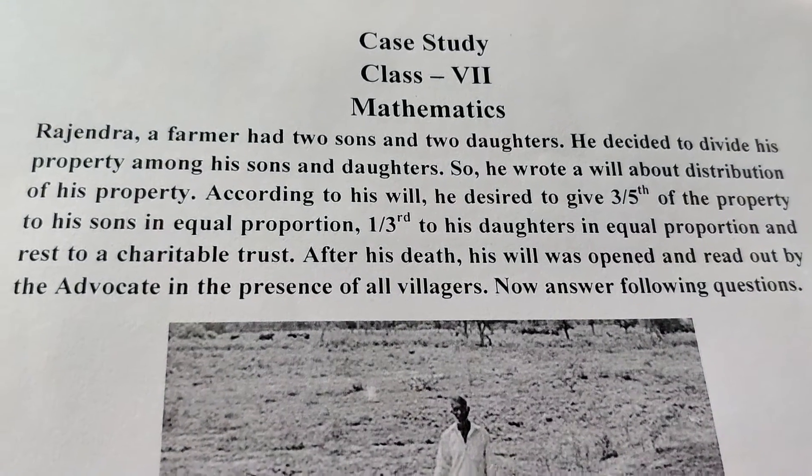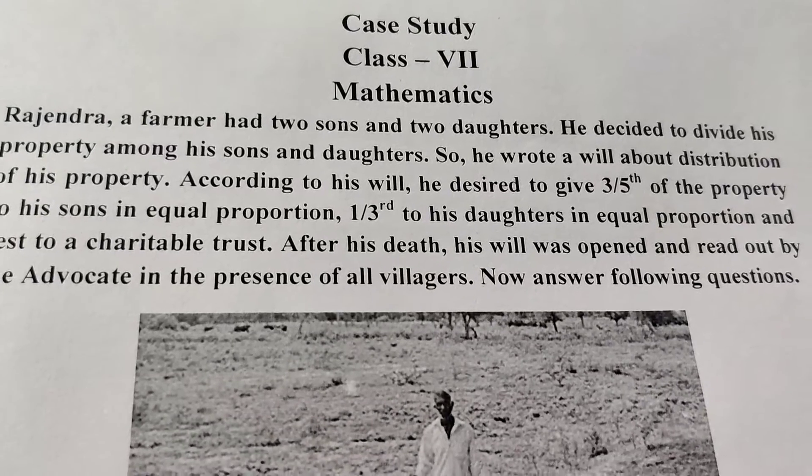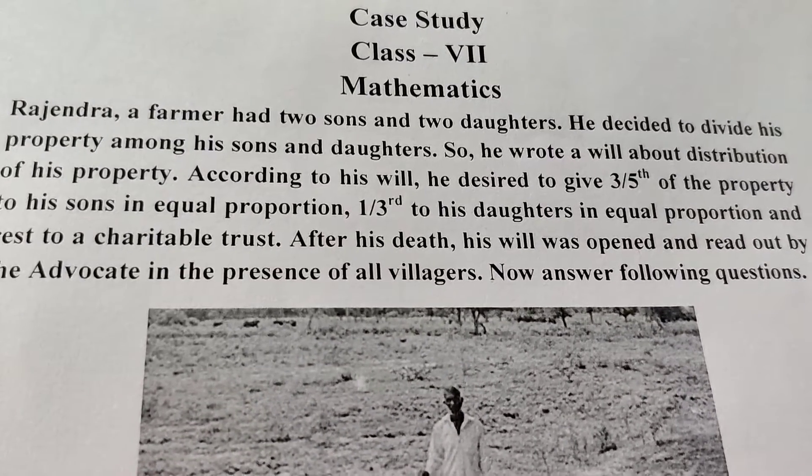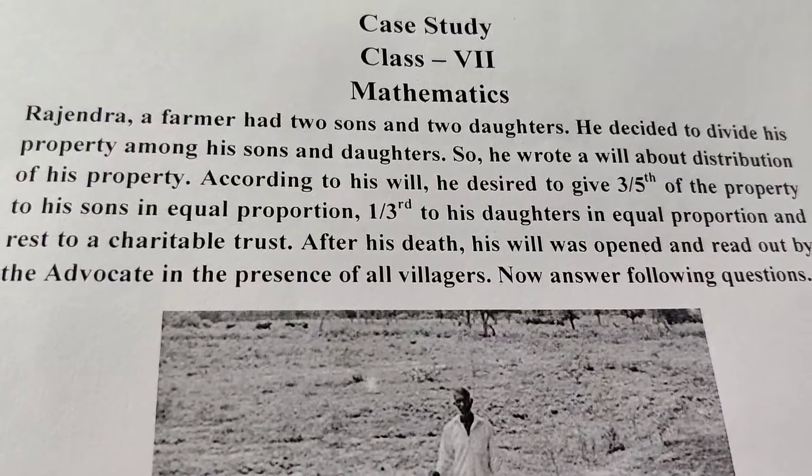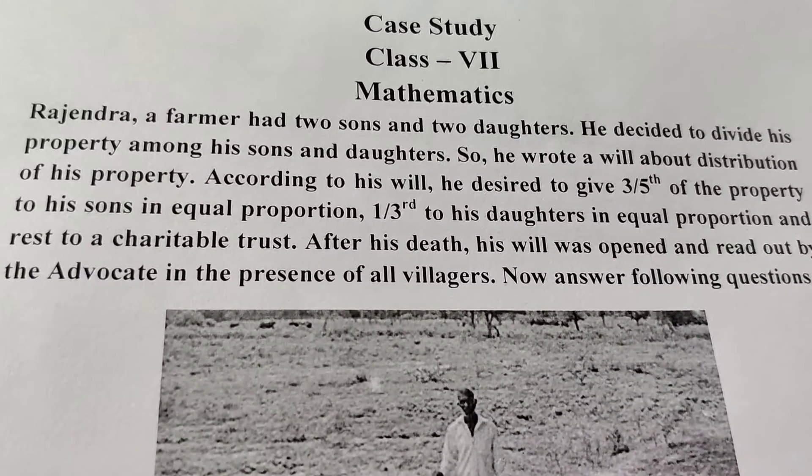Case study question for class 7. The question is: Rajinder, a farmer, had two sons and two daughters. He decided to divide his property among his sons and daughters. So he wrote a will about distribution of his property.